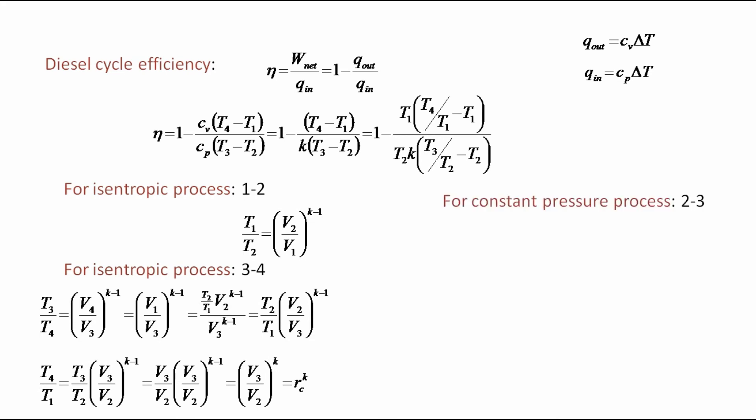And similarly for constant pressure process 2 to 3, P2 is equal to P3 we know ideal gas law RT2/V2 is equal to RT3/V3. So T3/T2 is equal to V3/V2 that is equal to rc then efficiency 1 minus 1 by r^(k minus 1) into (rc^k minus 1) by k(rc minus 1).